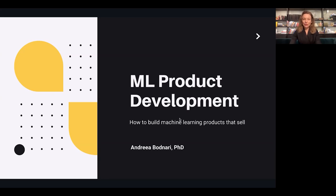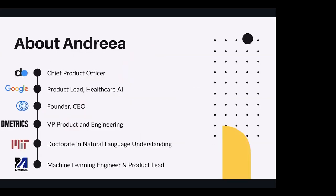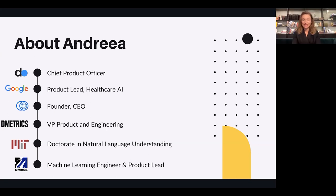Before we dive into the topic, a bit about myself. I'm a chief product officer at Data Orb AI, and I'm also a faculty with NYU, where I teach machine learning at an undergrad level. My journey in product development started back at UMass Medical School in Worcester, where I was a machine learning engineer and a product lead for clinical decision support tools. We were looking at pancreatic cancer and enabling doctors to make better prescription decisions and infer outcomes based on the treatments they were prescribing to pancreatic cancer patients.